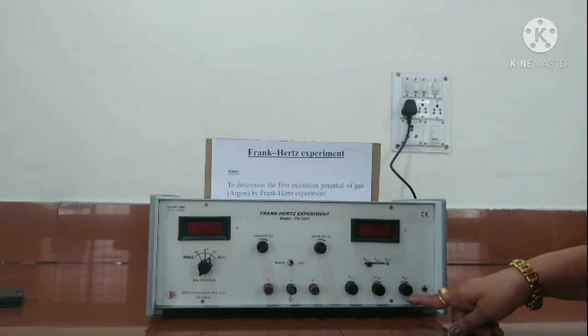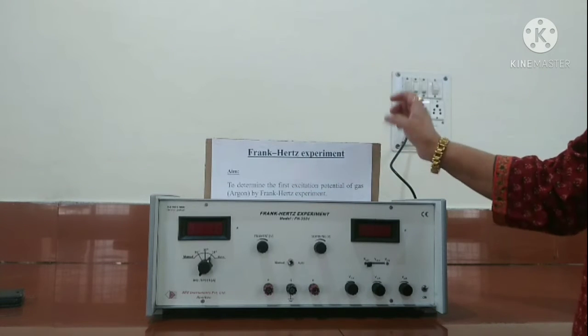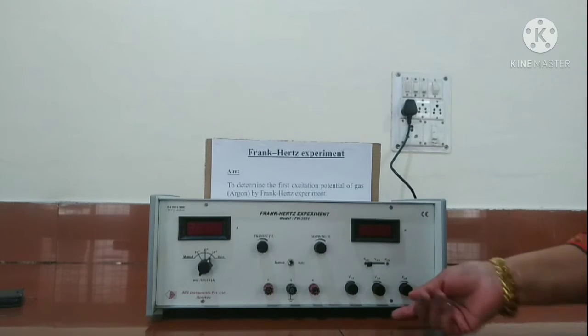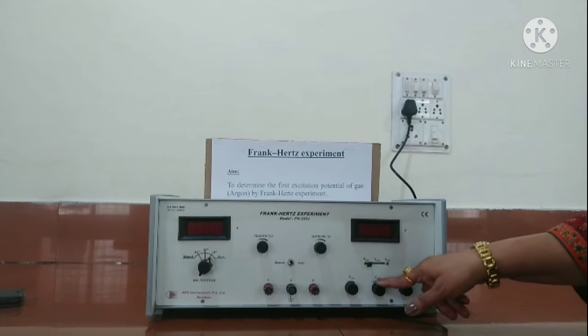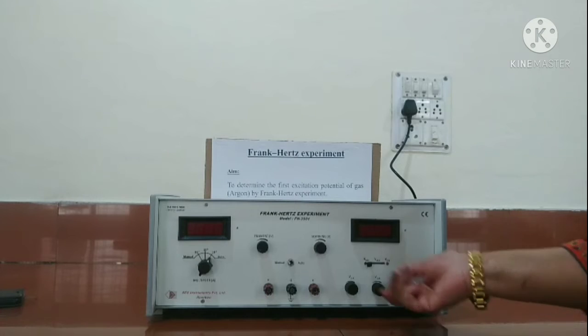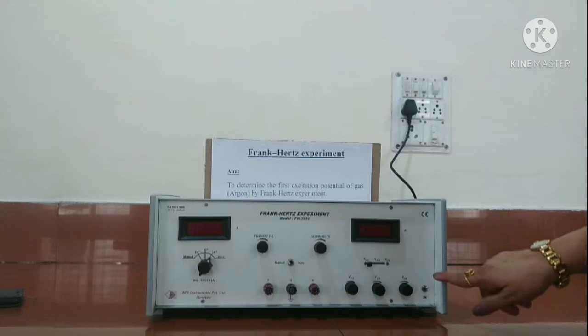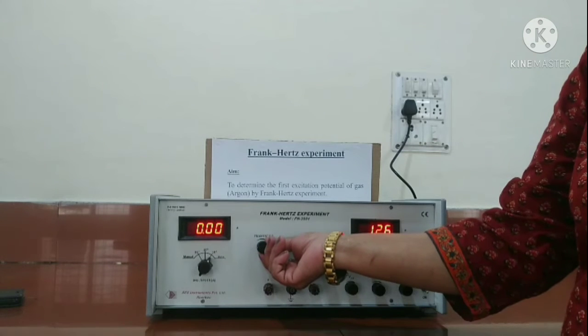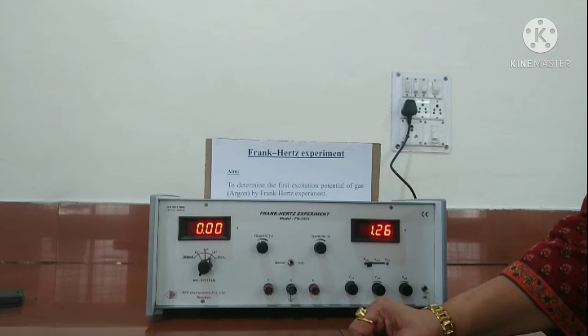Now let us start the experiment. To start with the experiment, first thing is that whenever we want to switch on this apparatus, we must ensure that all the knobs are at their minimum position. We should check it and then only we can switch on the device. Now first set the filament voltage so that by the time we start our experiment it gets stabilized. 2.6 voltage is given.